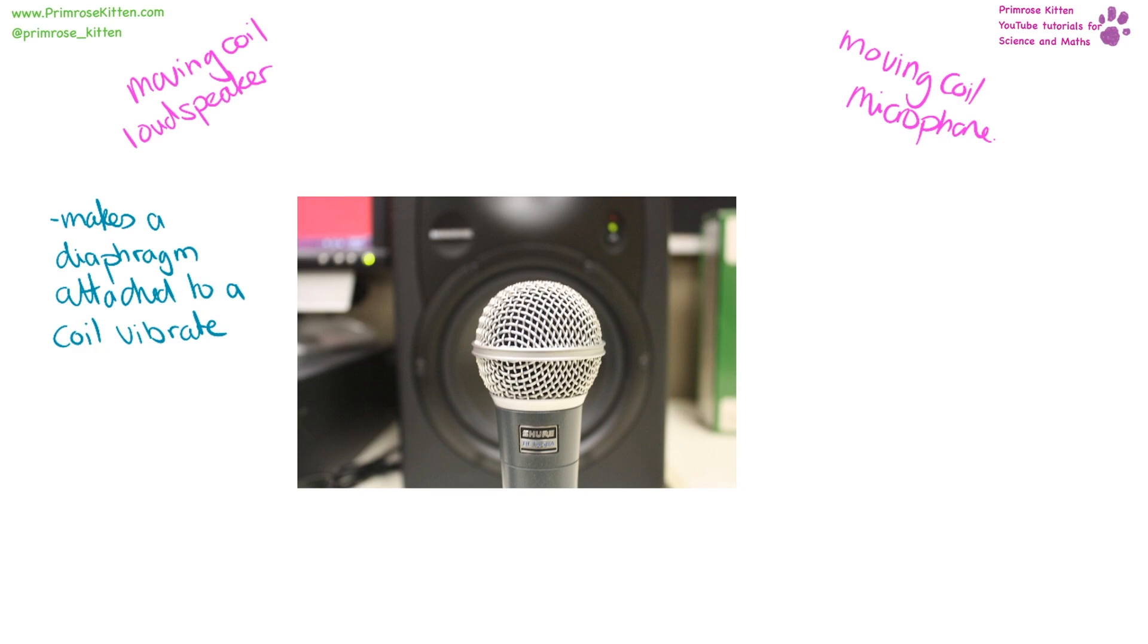A moving coil loudspeaker works by making a diaphragm attached to a coil vibrate. When we have a current passing through the coil, the force that is generated via the motor effect makes the coil move. Every time the current changes direction, the force reverses direction, so the coil is going to be going back and forwards, making the diaphragm go back and forward, generating sound waves.